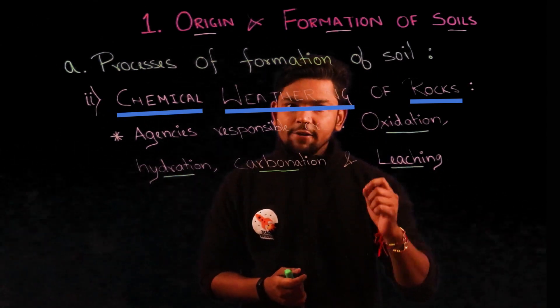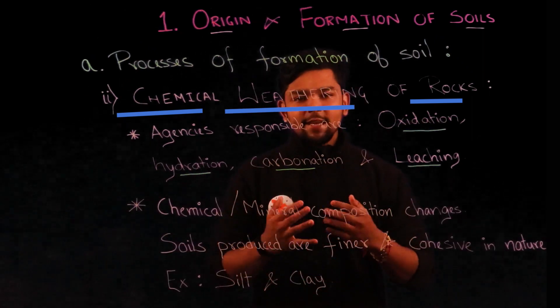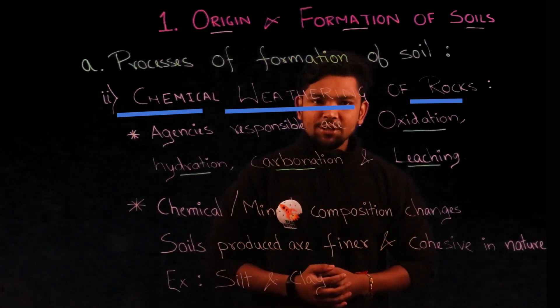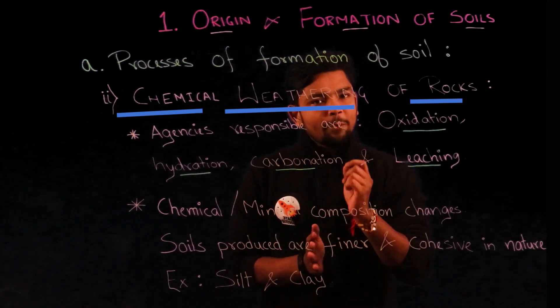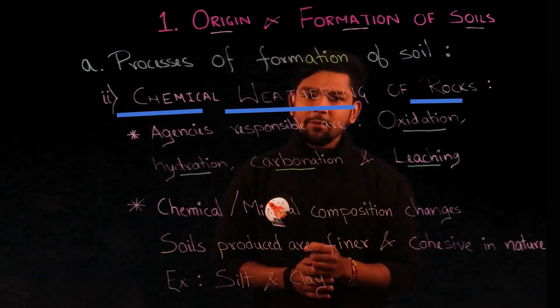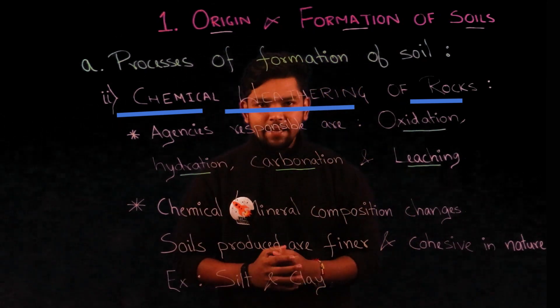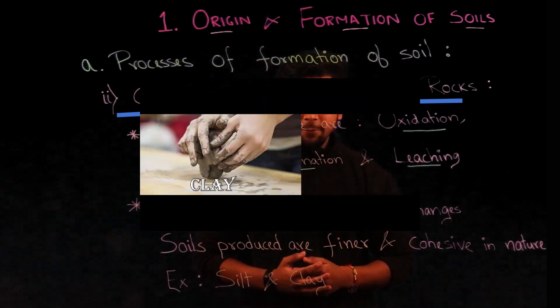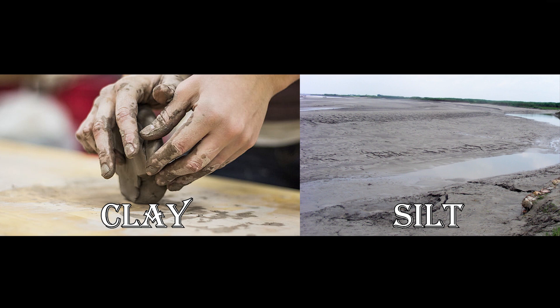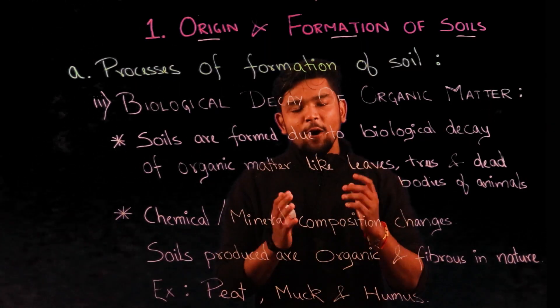In chemical weathering, the chemical and mineral composition of the soil formed is different from that of the parent rock. It produces finer soil material of a cohesive nature. Rocks containing silica as their mineral are known to be more resistant to this type of weathering. Clay and silt are examples of soil formed due to chemical weathering of rocks.